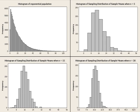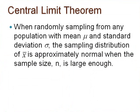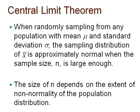This is the essence of the central limit theorem, and this theorem will help us structure our initial understanding of confidence intervals. The central limit theorem states: when randomly sampling from any population with mean mu and standard deviation sigma, the sampling distribution of the sample mean x-bar will be approximately normal when the sample size n is large enough. The size of n depends on the extent of non-normality of the original population. Review all these ideas from the first three videos to prepare for the topic of confidence intervals.